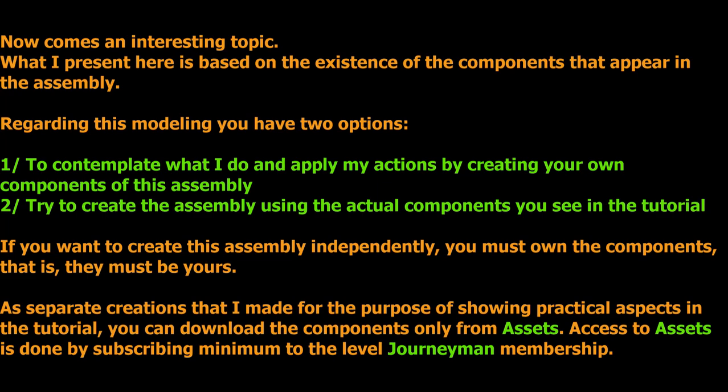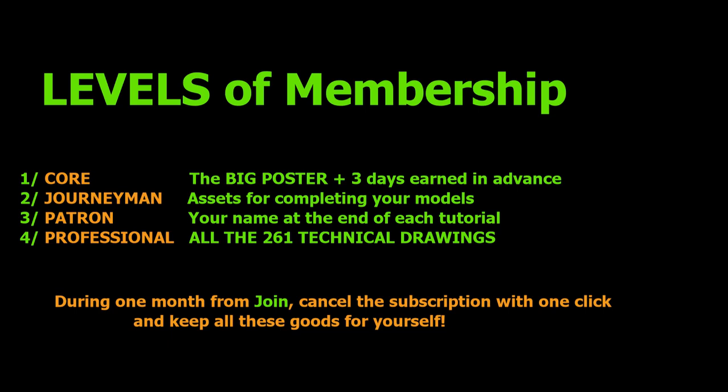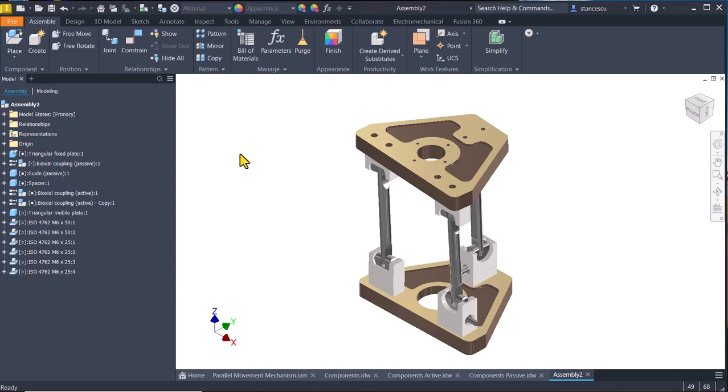You can download the components only from assets. Access to assets is done by subscribing minimum to the Journeyman membership level. You see here the levels of membership: Core, Journeyman, Patron, Professional. Except Core, the other ones include the previous ones. That's all for today.